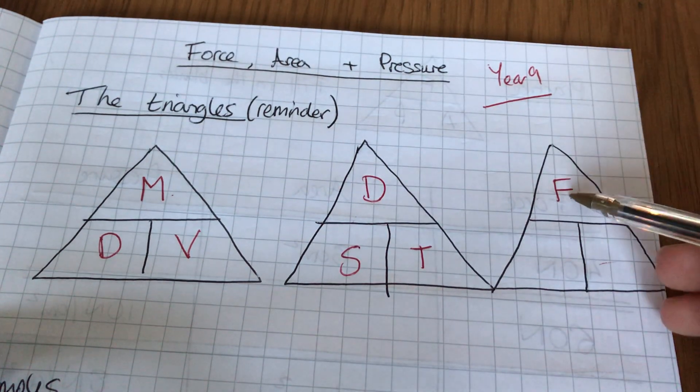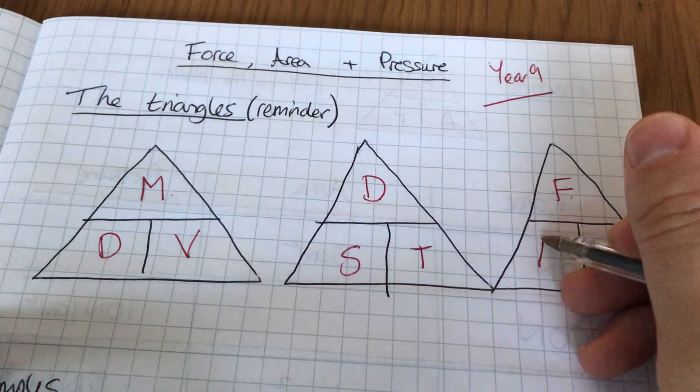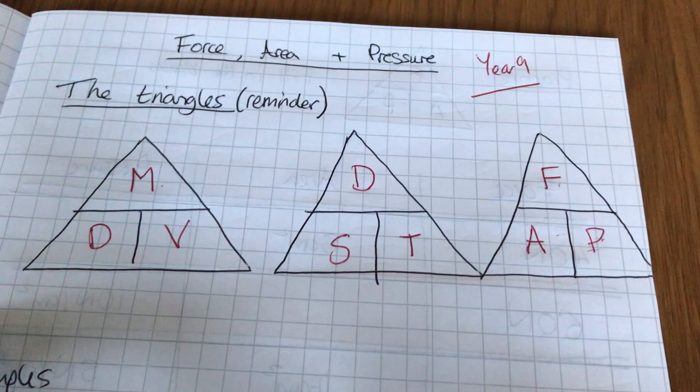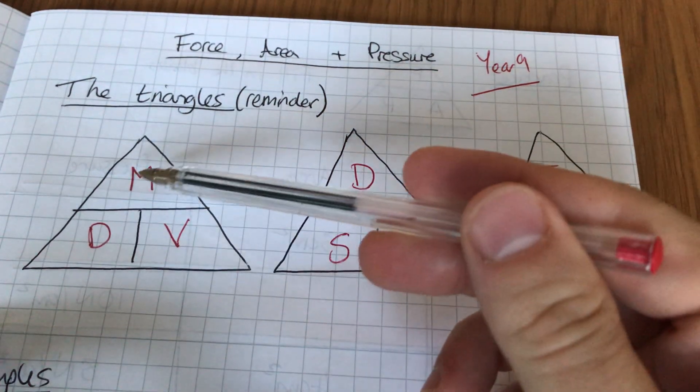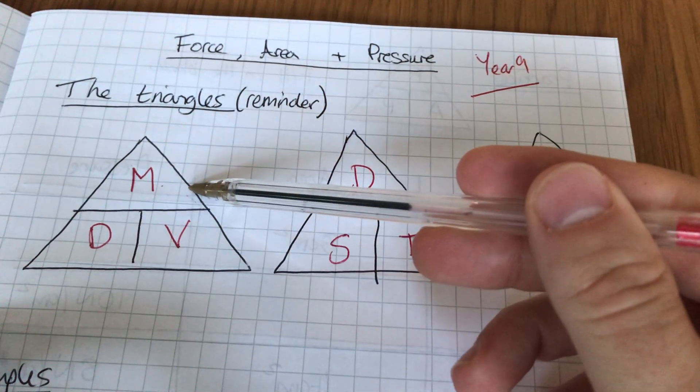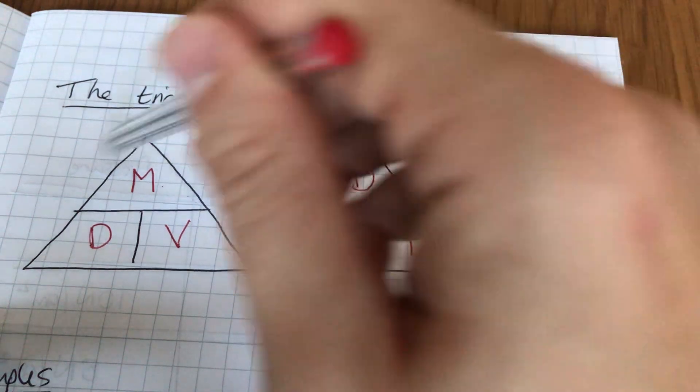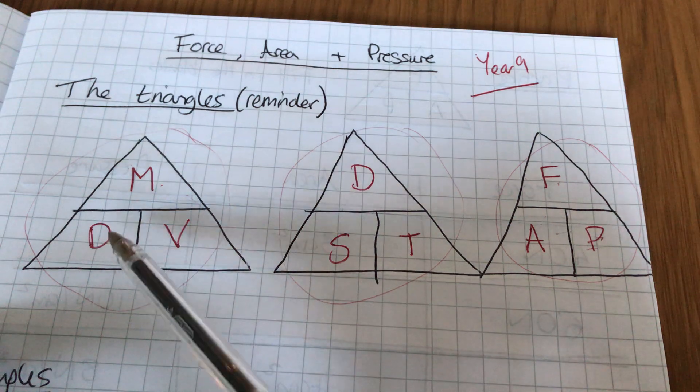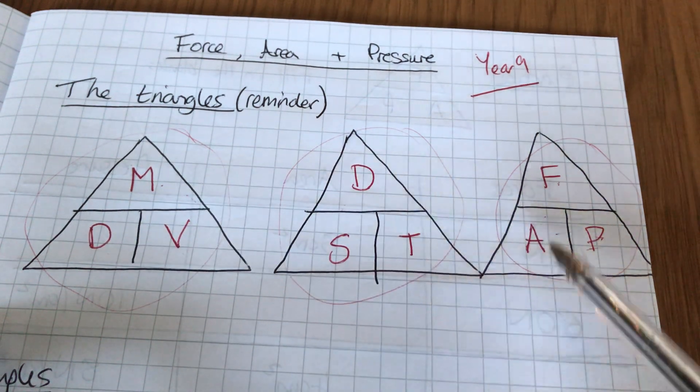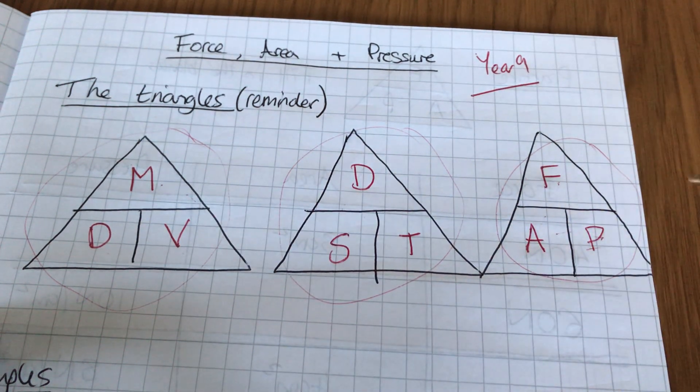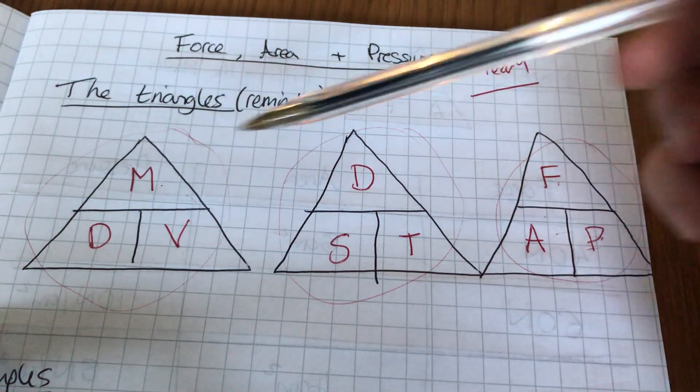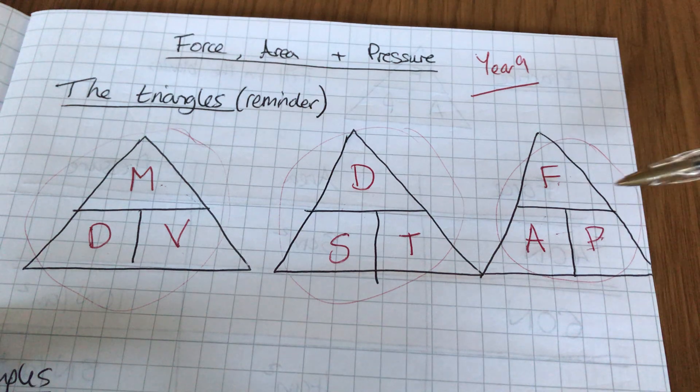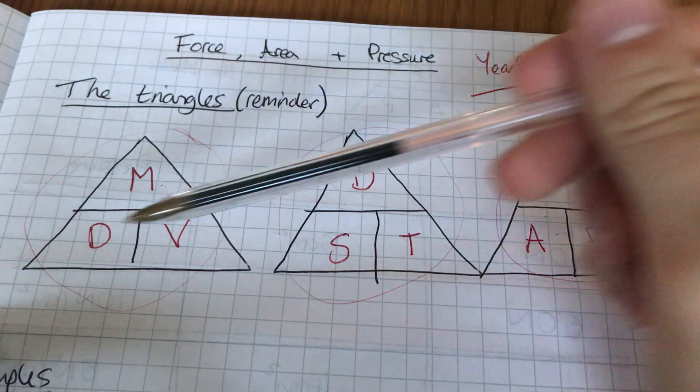I remember the D on the top stands for distance, so that's with speed and time. And I remember that the force is always with area and pressure. So there are my three triangles. Doesn't matter whether you had this one on the left or on the right or in the middle, as long as that's one, that's one, and that's one, you're fine.